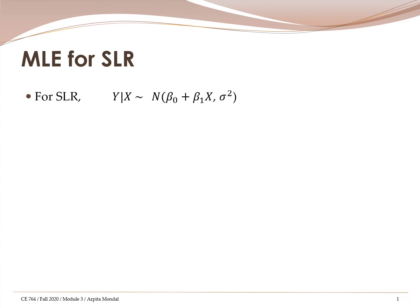So far we have seen how to estimate the parameters beta0 and beta1 using the method of least squares and also how to get the standard errors of those estimates. However, if you recall our discussion from module 2 estimation, there we had said that our favorite method of estimation is going to be the maximum likelihood estimation method. So now we are going to see how we can implement the method of maximum likelihood estimation for simple linear regression.